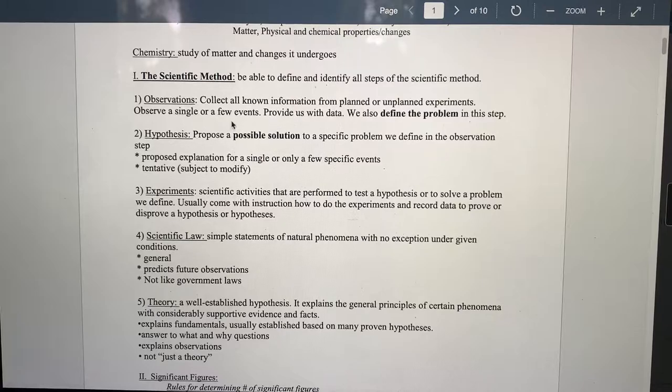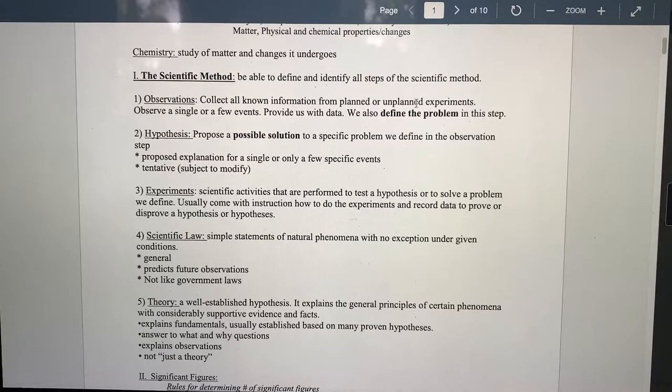The first one is making observations, whether we plan the experiment or we don't. If something's happening, we make the observation and we record the data. In this step, we make the observations, we collect all the known information from planned or unplanned experiments, maybe just watching someone doing experiments, and then make the observations. For one single event or a few events for one experiment or a few, that provides us with data, and we define the problem in these steps. The problem to be solved, such as pollutions, for example, you make the observation, the air quality is not good, cloudy, smoky, and the problem is pollutions, and we define the problem.